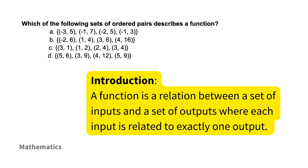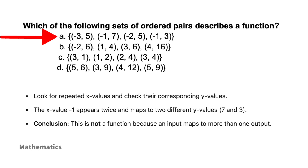A function is a relation where each input is related to exactly one output — meaning no x value can map to more than one y value. Analyzing option A: the pairs are (-3,5), (-1,7), (-2,5), (-1,3). The x value -1 appears twice and maps to two different y values — 7 and 3. Therefore option A is not a function, because an input maps to more than one output.